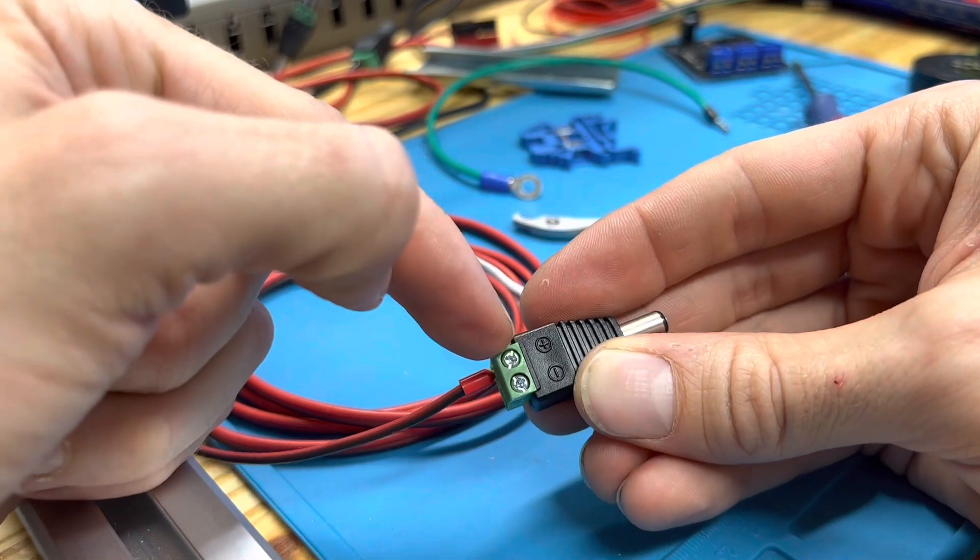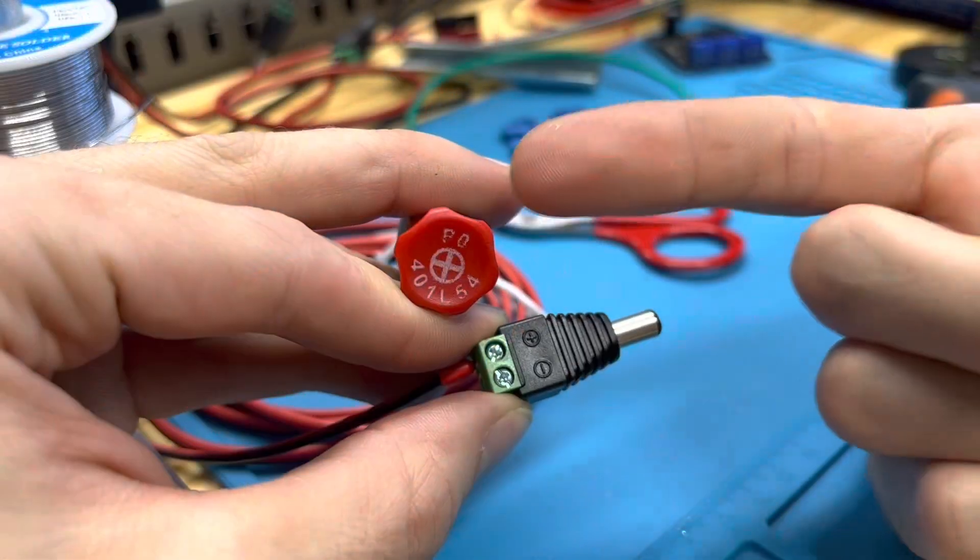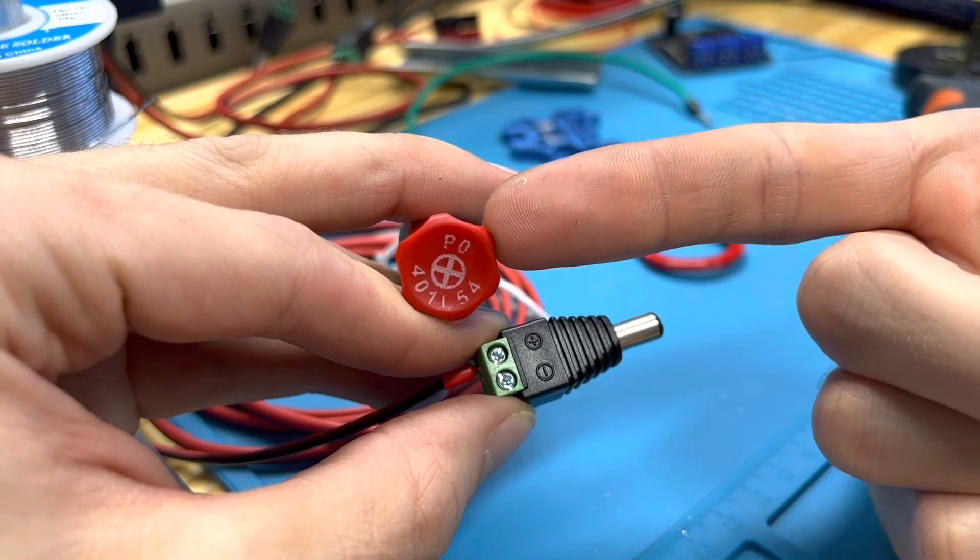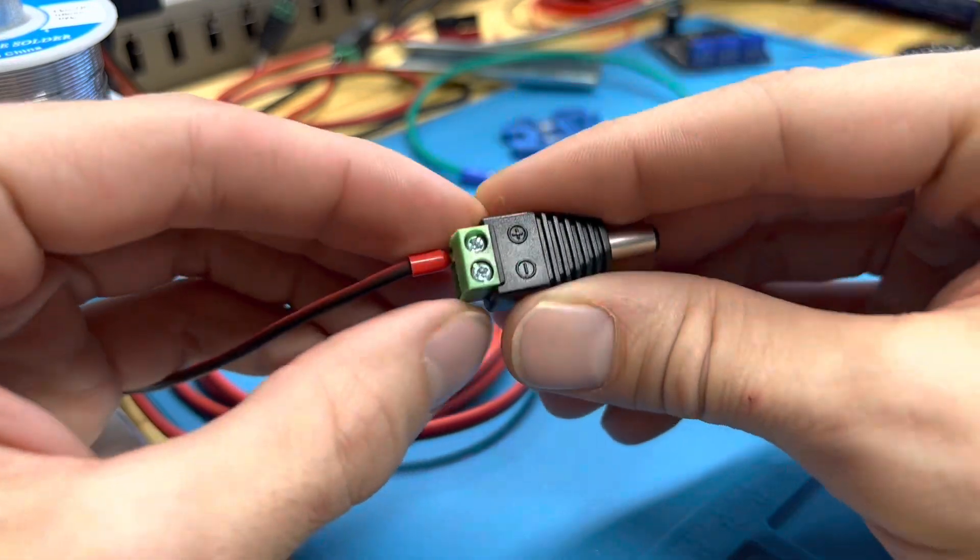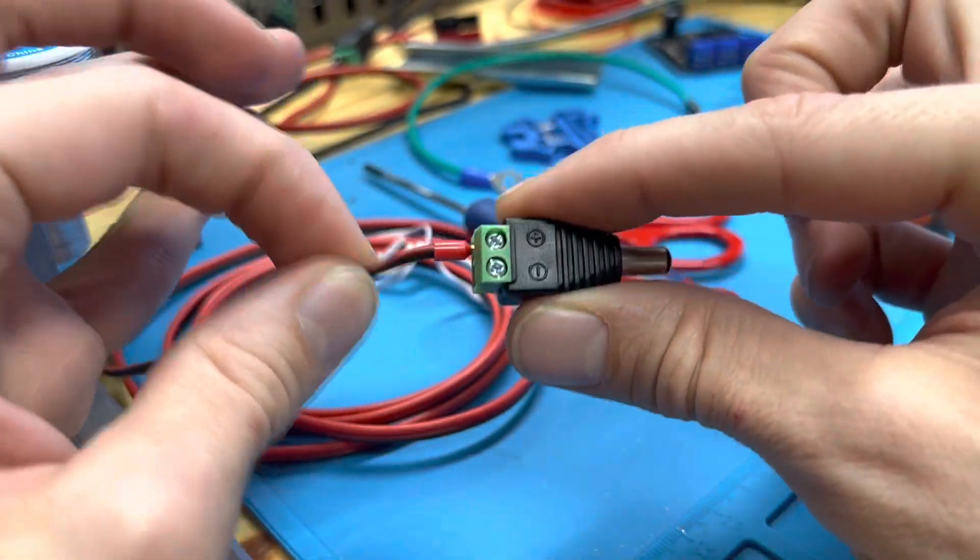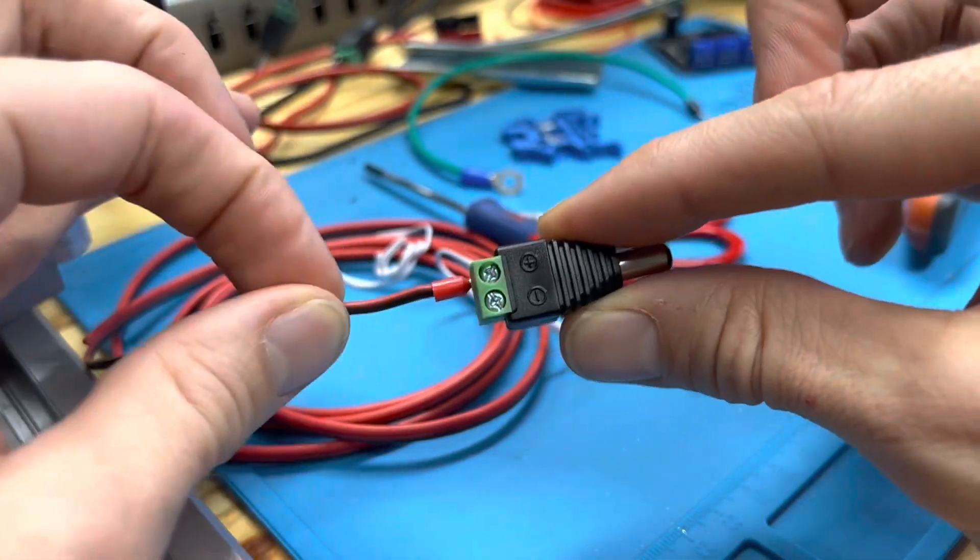Last step is to screw down this screw. Please make sure you're using the right size of screwdriver. This one's a P0 or P1 will work for this type of terminal. And you can do one more tug test. It won't pull out so we're good.